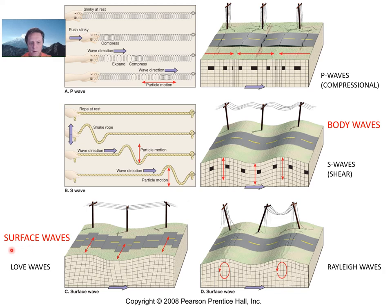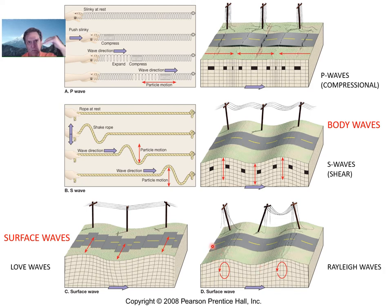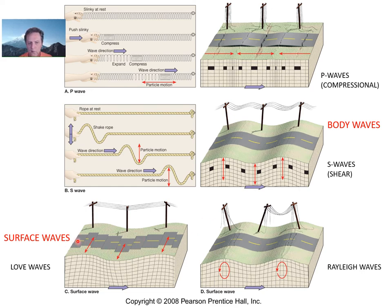Then come the destructive surface waves. Love waves cause an undulation of the ground like a snake crawling through grass — back and forth near the surface. Rayleigh waves cause the ground to move up and down just like waves traveling across the ground; in a major earthquake, these ground waves are actually visible. The most destructive waves are the surface waves — love waves and Rayleigh waves — because they're so close to the ground surface.